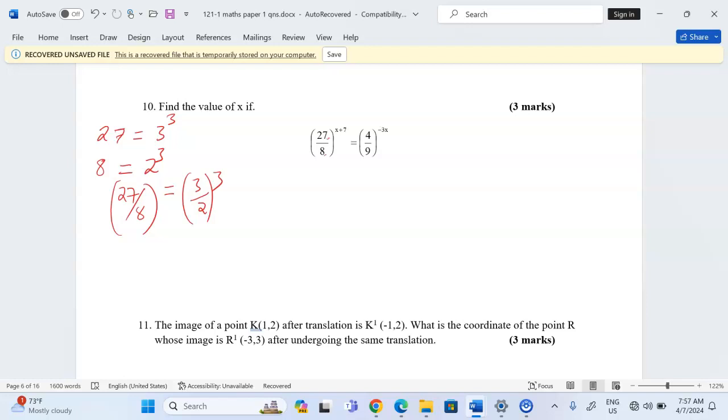Therefore now, on the left hand side, we can talk of 3 out of 2 raised to power 3. And remember, there is an existing x plus 7. This is equal to,